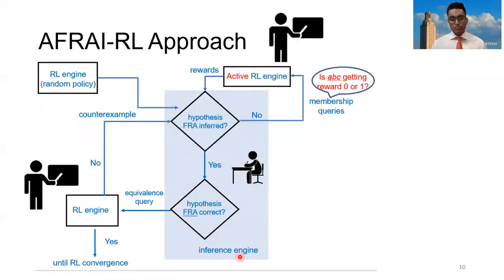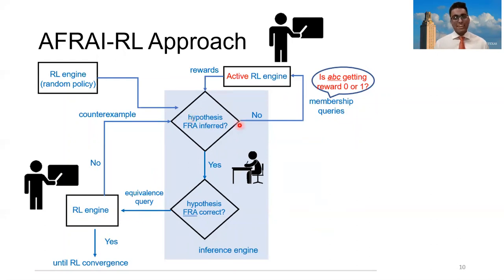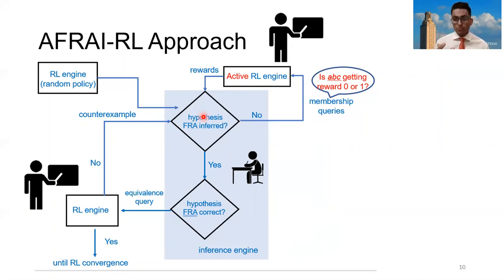In the middle is an inference engine marked by the student, and we have two teachers: one reinforcement learning engine that answers equivalence queries, and another that answers membership queries. We start off with a random policy, and the inference engine decides whether or not it can infer a finite reward automaton. If it can't, then it asks a series of membership queries — do these set of actions give me a reward of zero or one? The RL engine will perform RL and give the rewards back to the inference engine, telling it which actions gave which rewards.